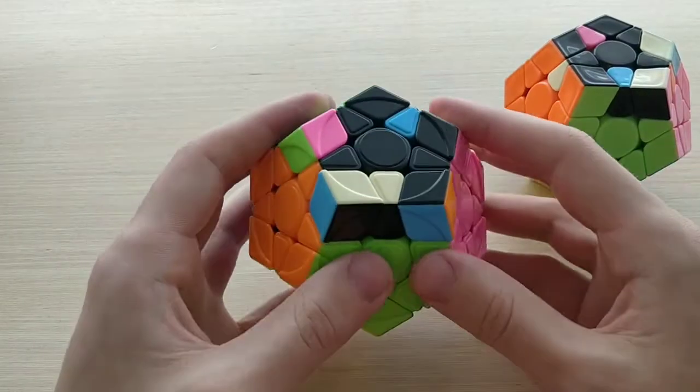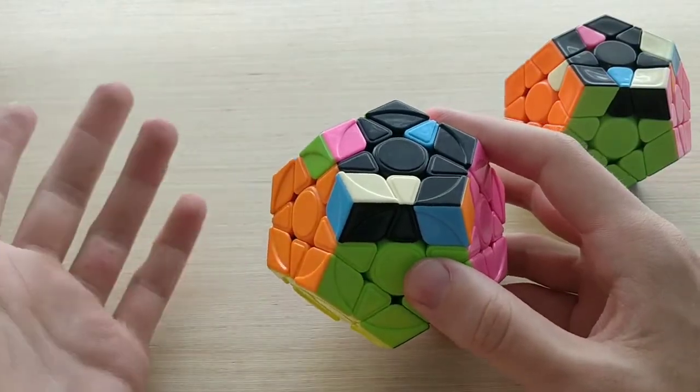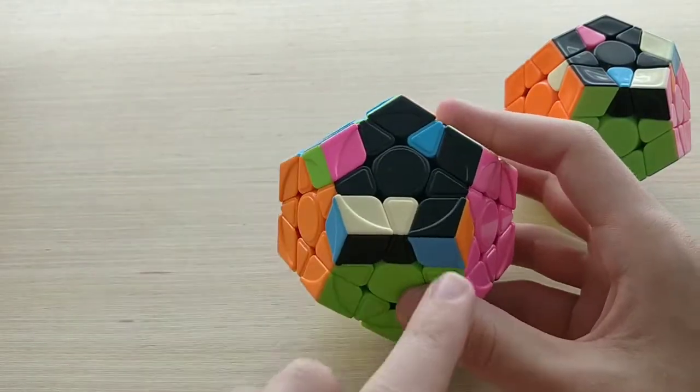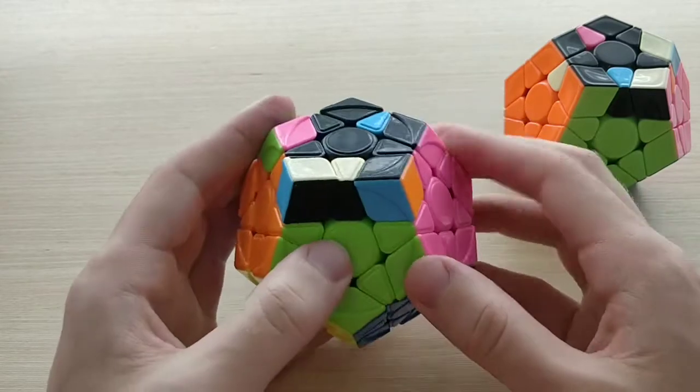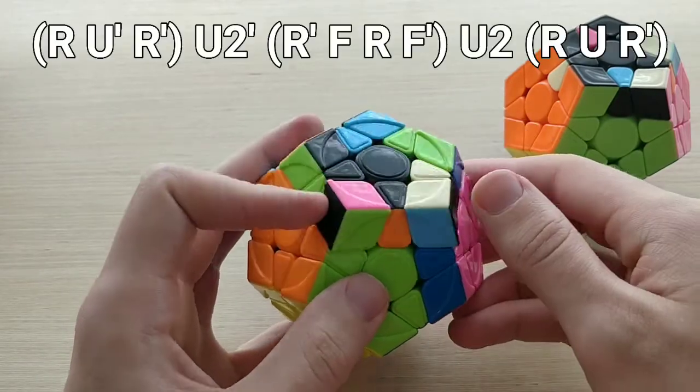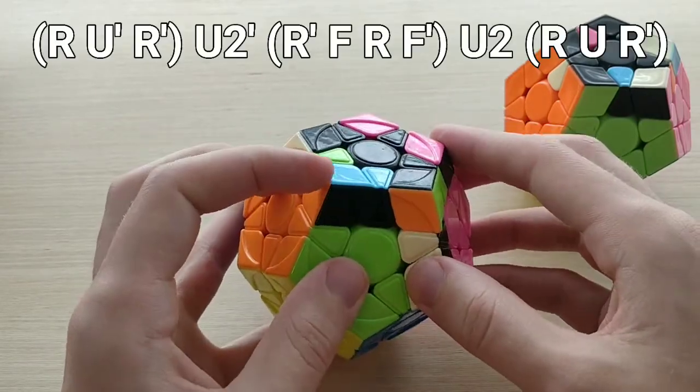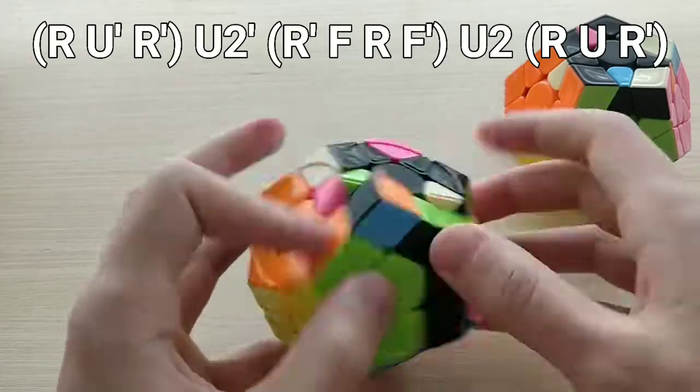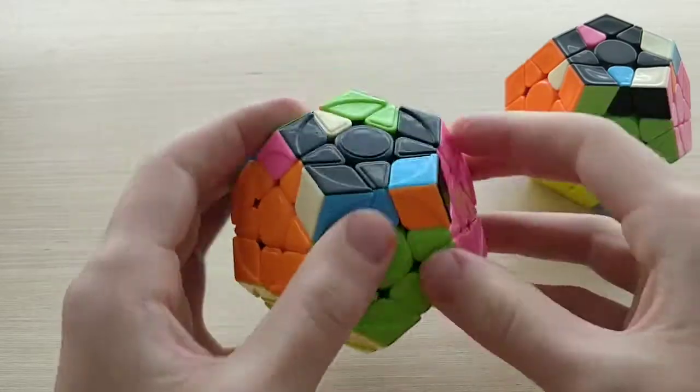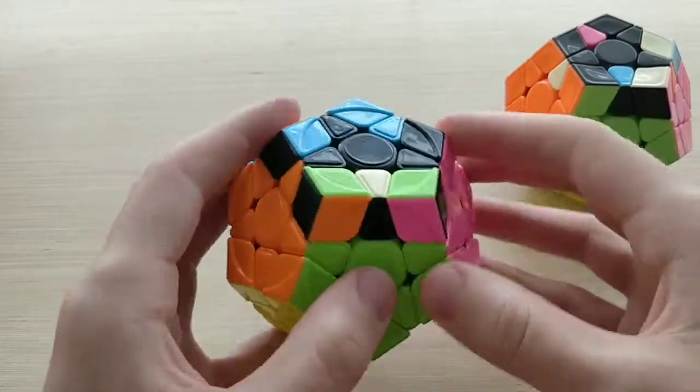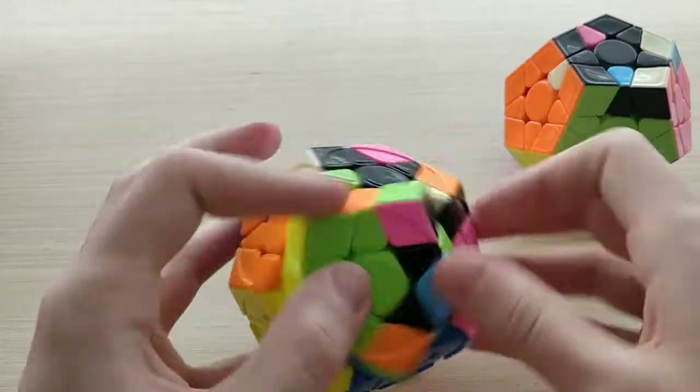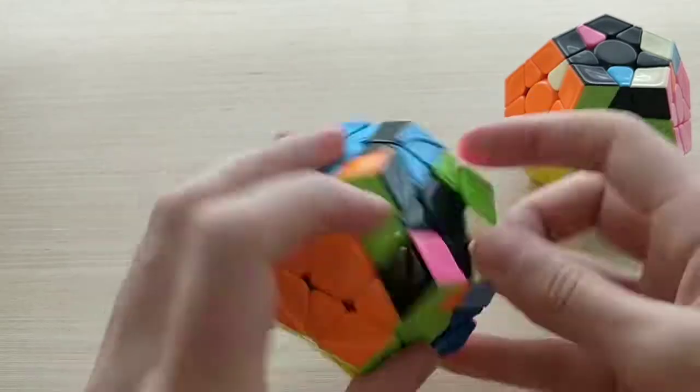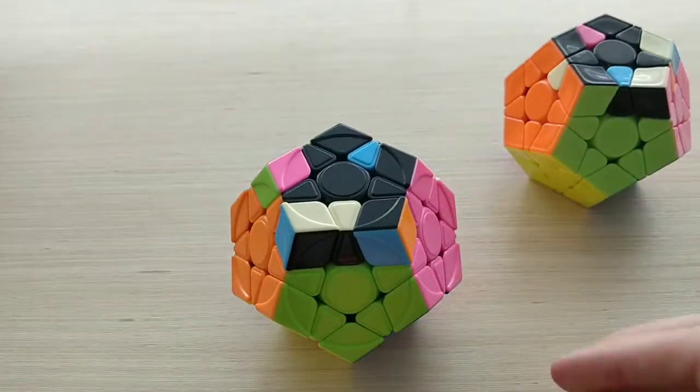For 10B plus here, this is again just very basic RUF triggers. We're going to hold the block in the front left like that and then do this. R' U' R', U2', sledge, U2, R U R'. No real fancy turning or anything, just basic RUF stuff.